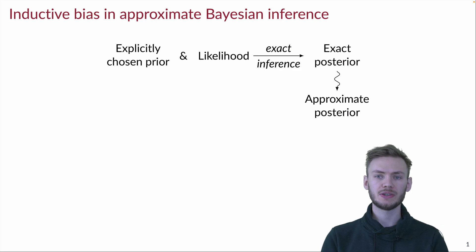In a usual Bayesian setting, prior and likelihood explicitly specify the inductive bias of inference based on the exact posterior, but in practice it is often infeasible to compute the posterior exactly and one has to revert to approximations instead. But using approximations can change the inductive bias in uncontrollable ways.